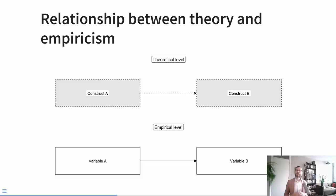We can connect the empirical cycle to the distinction between constructs and variables. Your theory may imply a relationship between construct A and construct B. To make that testable, you translate it to the empirical level: if the theory implies a relationship between construct A and construct B, then empirically we will see an association between variable A and variable B. Here's a practical example from a recent study I was involved in: the theory dictates that being exposed to war increases depression, and we make this testable by investigating whether being deployed to an active war zone positively predicts scores on a depression inventory.